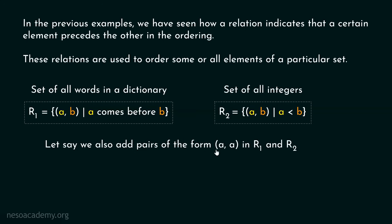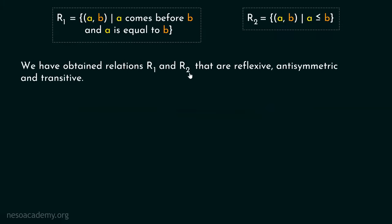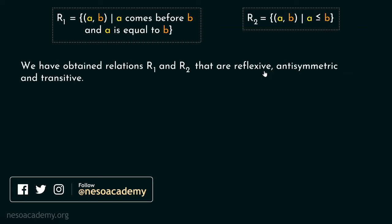Now, let's say we also add pairs of the form A comma A in R1 and R2. Currently, there are no such pairs possible in these two relations. But if we add all the pairs of the form A comma A in R1 and R2, then R1 must consist of all ordered pairs such that A comes before B or A is equal to B, and R2 must consist of all ordered pairs such that A is less than or equal to B. The relations so obtained will be reflexive, anti-symmetric, and transitive.